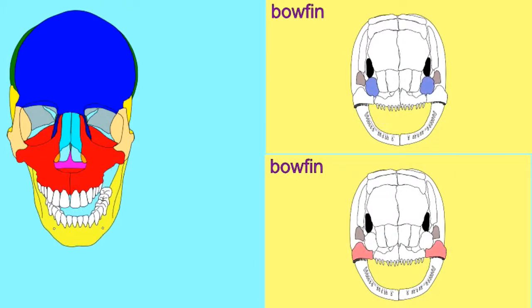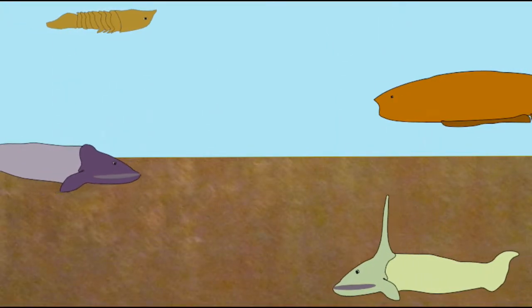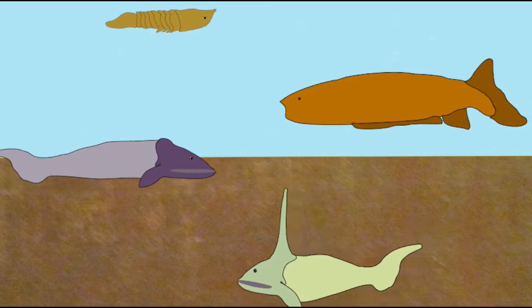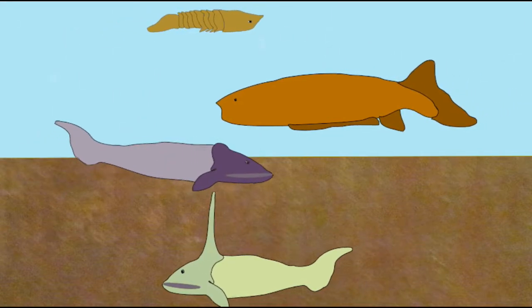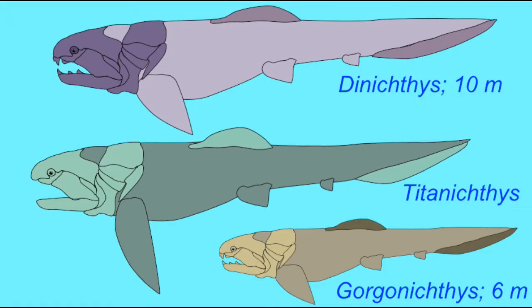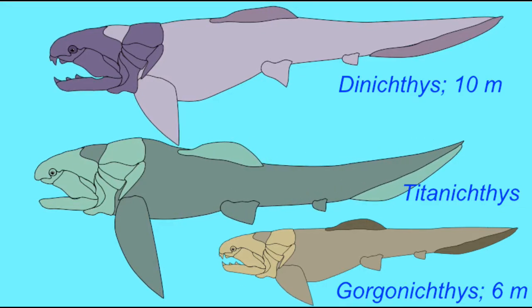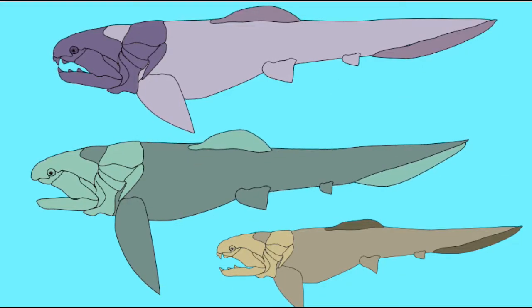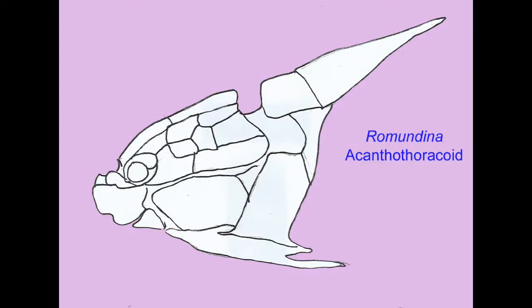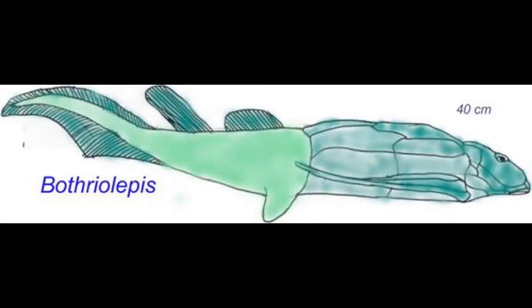Much of the human skull is known as the dermatocranium, composed of dermal bone. While dermal bone dates back to jawless fish early in the Paleozoic, these jawless fish and the later jawed placoderms had large bony plates, and it's not quite certain if any of these are homologous to the bones in the dermatocrania of modern vertebrates.